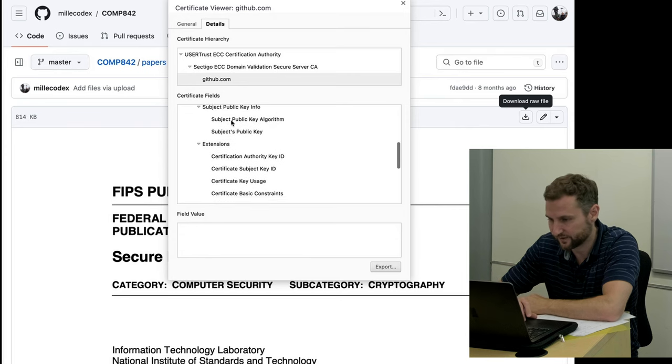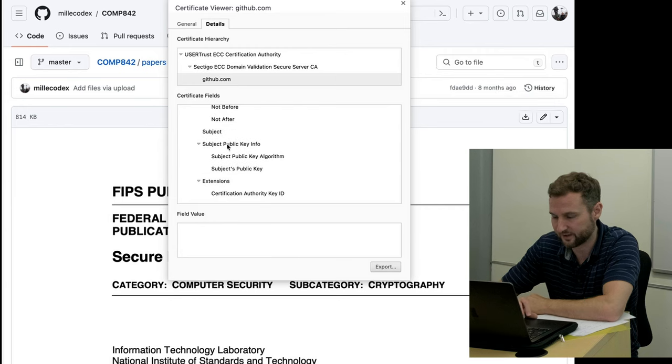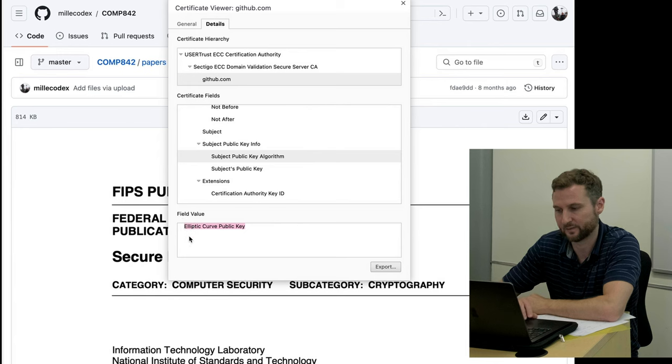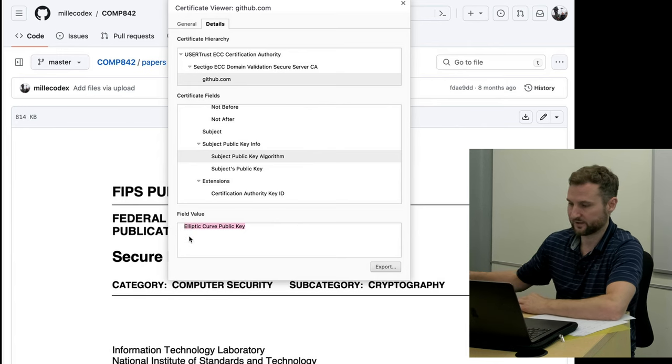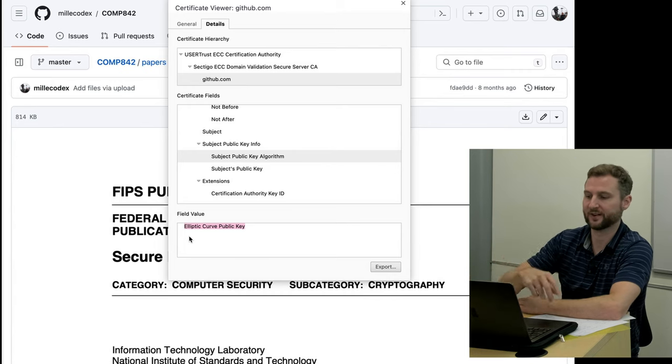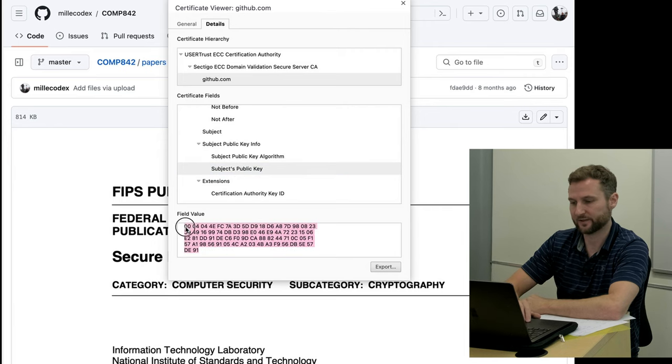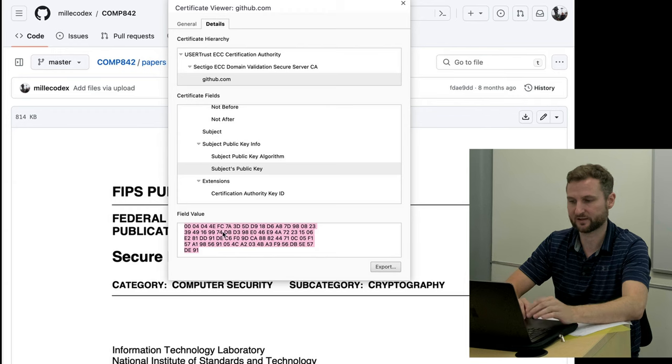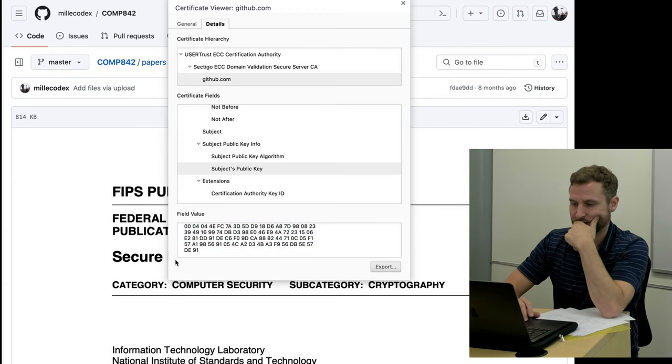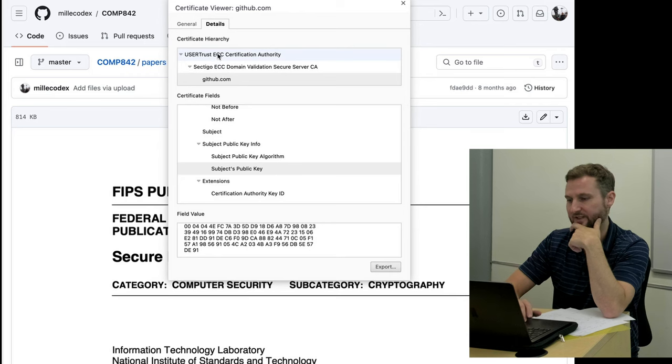There's a few different fields in here. So I found here it says subject public key info, public key algorithm, and so here it says elliptic curve public key algorithm. So that's using elliptic curves which inherit the discrete logarithm security in order to derive a public key. We see ECC, that's short for elliptic curve cryptography.